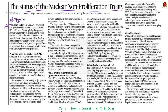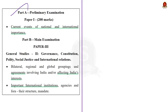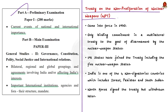This article is about the five global nuclear powers who pledged on January 3rd, 2022 to prevent nuclear conflict. The five nations include China, Russia, the US, UK, and France. In this context we'll learn about the NPT, its current status, and issues surrounding it, along with solutions to address those issues.